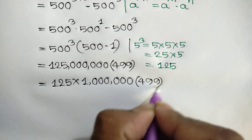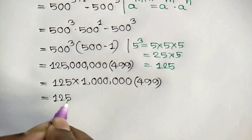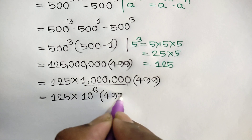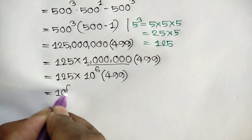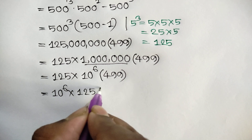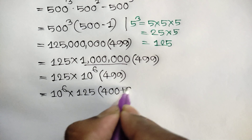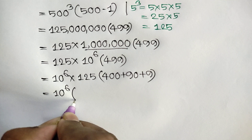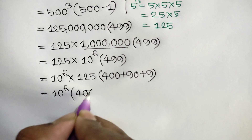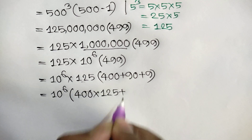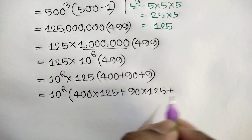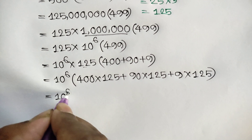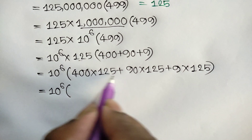125 times 499 is equal to 10 to the power 6 times 125 times 499. We can write 499 as 400 plus 90 plus 9. So this equals 10 to the power 6 times 125 times (400 plus 90 plus 9).